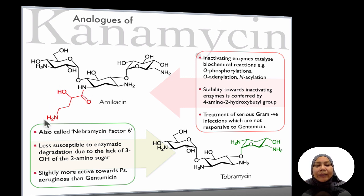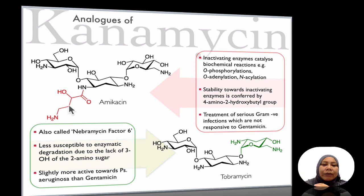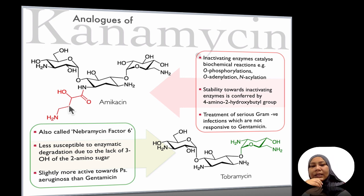One way to improve stability is by substituting a 4-amino-2-hydroxybutyl group at the aglycone position of kanamycin. This derivative is called amikacin. Amikacin is used to treat very serious gram-negative infections in patients that do not respond to kanamycin.